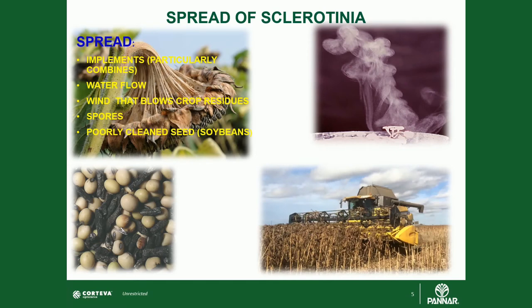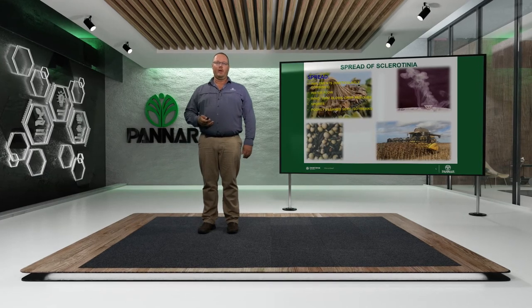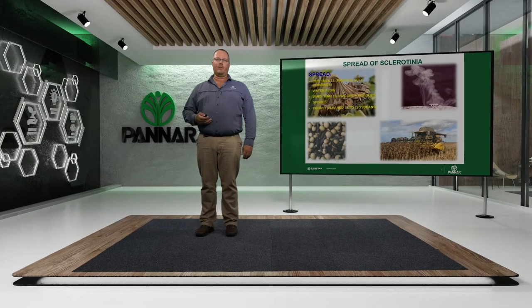The spread of Sclerotinia on your farm can happen in several ways. Firstly, implements not cleaned properly — specifically combines moving between fields or farms — can spread sclerotia over vast distances. Secondly, water flow or wind can spread diseased material between fields, and spores from the head rot phase can also be blown across different fields. Lastly, poorly cleaned seed, especially farm-kept seed processed on the farm, can carry sclerotia from one field to another.